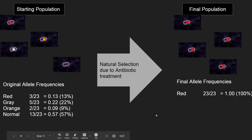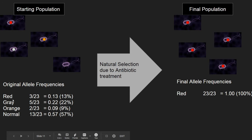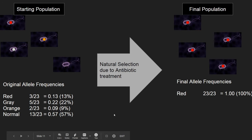Our starting population had a lot of variety. The allele frequencies were varied: 13% with the red mutation, 22% with the gray-white one, 9% with the orange mutation, and 57% of the population was normal without any mutation. But now, with the antibiotics, natural selection has happened. The weak have been eliminated. The most fit for this environment were selected — they survived, reproduced, and passed on the trait that made them successful. We changed genetically to just one type, and what we have bred is a species of bacteria that can resist all those antibiotics.